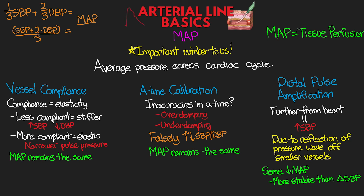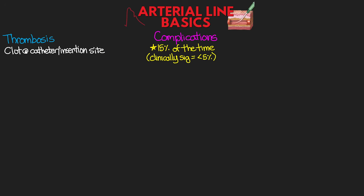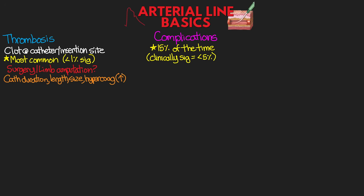As with almost anything we do in the ICU, there are potential complications to arterial lines, including some potentially lethal ones. Complications are reported to occur around 10 to 15 percent of the time. Of these, those that were clinically significant are believed to be less than 5 percent, making it a generally safe procedure. One potential complication is thrombosis — a clot forming at the catheter or insertion site — and this is actually the most common complication. It's usually not serious and rarely results in significant ischemia, so less than 1 percent of the time. This could lead, though, to surgery and possibly limb amputation. The duration of catheter insertion, its length and size, and hypercoagulable states all increase risk. The continuous flush system in our tubing helps to mitigate this risk.